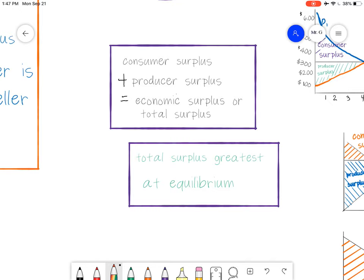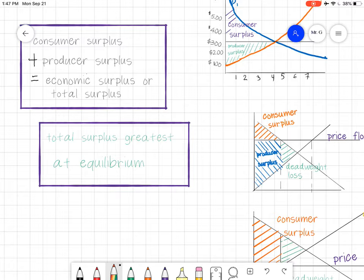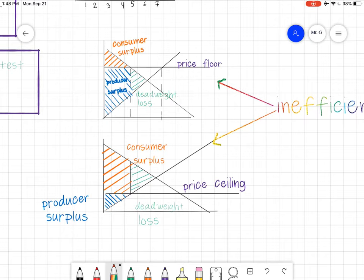If you add up the consumer surplus and the producer surplus, you have something called the economic surplus or total surplus. Names are the same or they mean the same thing. Total surplus is greatest at equilibrium. So when the market is in equilibrium, the total surplus is going to be the greatest.